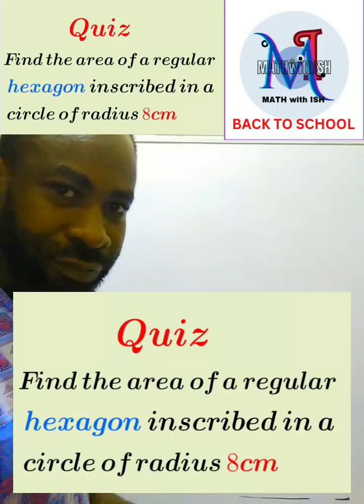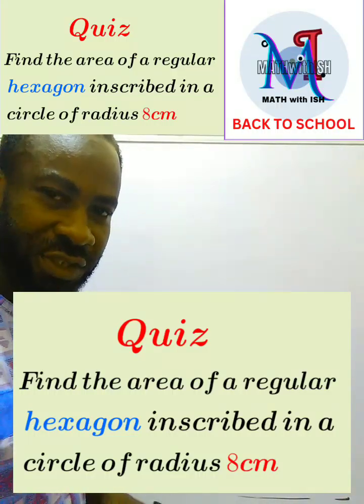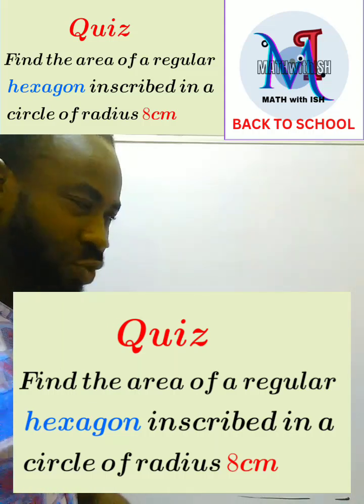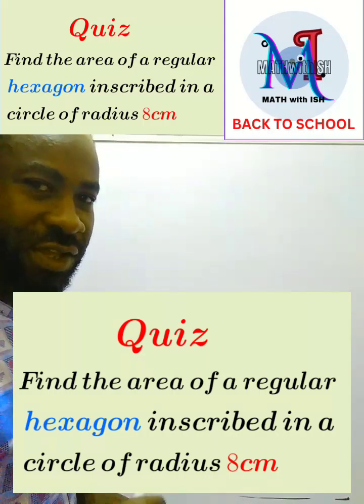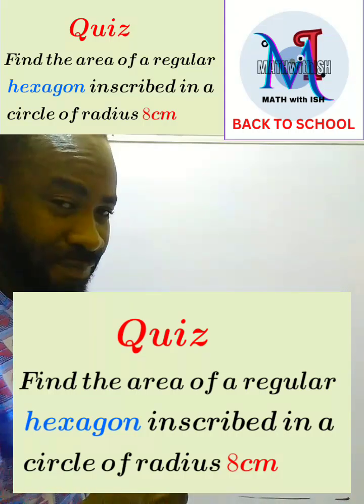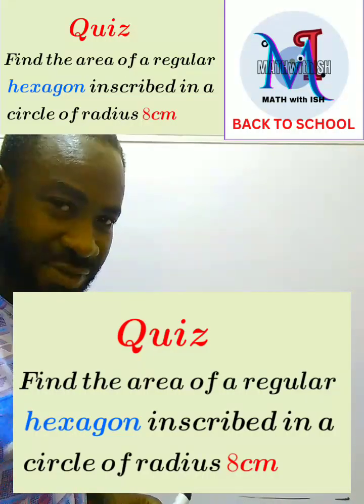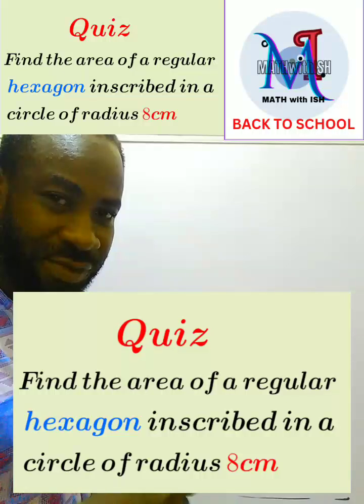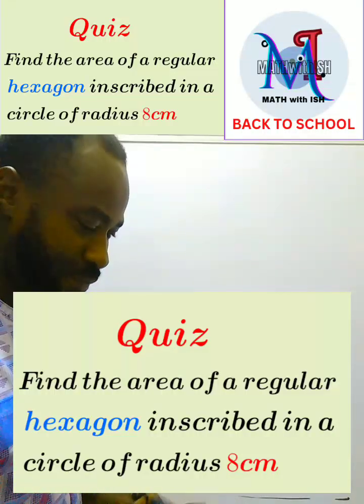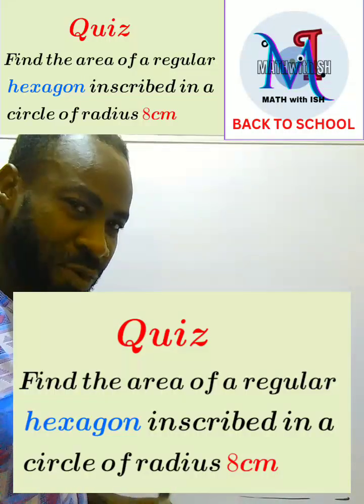Hey, welcome to Math with Ish. Today this question says we should calculate or find the area of a regular hexagon that is inscribed in a circle of radius 8 centimeters. So let's go, let's see how to solve this problem.